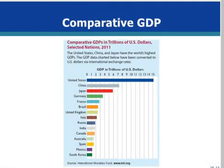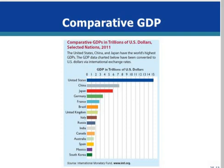In this table comparing GDPs for selected nations, the United States, Japan, and China have the world's highest GDP. Note that all data have been converted to U.S. dollars via international exchange rates.